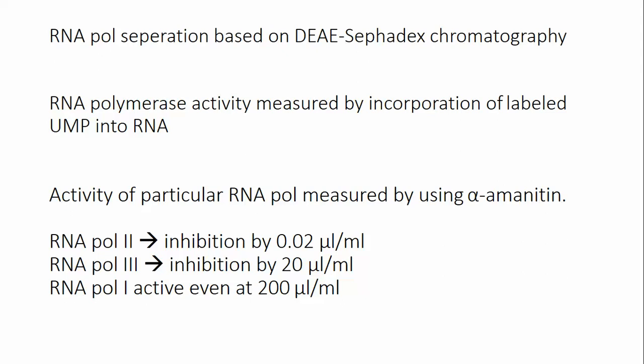The activity of RNA polymerases is checked by measuring the incorporation of labeled UMP, or uridine monophosphate, into RNA. The activity of particular RNA polymerases was measured using the drug alpha-amanitin. At a concentration of 0.02 micrograms per ml, it inhibited the activity of RNA Polymerase II.